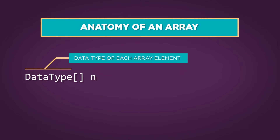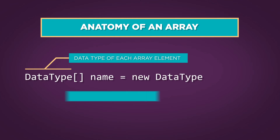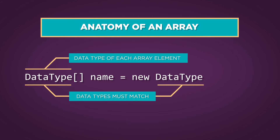Then, we add a variable name for the array. After the assignment operator, we add new data type — this must match the type of data chosen earlier. Following this, again we write square brackets, this time with a length in between the two brackets.